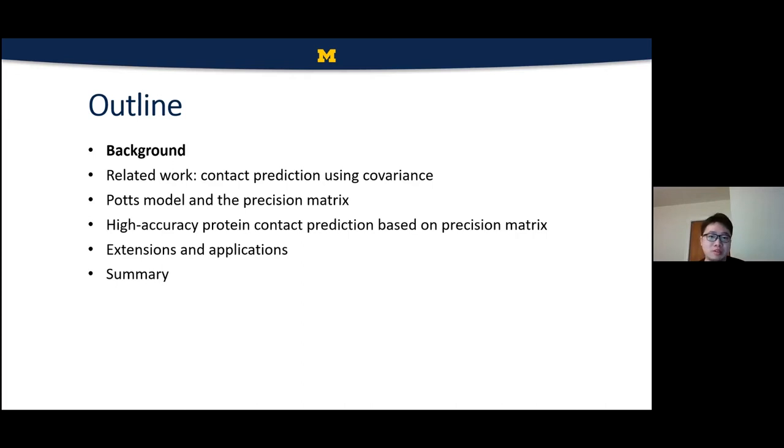A deep learning based method that uses the feature of covariance between two positions of the multiple sequence alignment data. After that, the inverse of the covariance matrix, the precision matrix will be introduced, which also can be interpreted as the Gaussian approximation with Potts model. And based on the precision matrix, a high accuracy protein contact map predictor, ResPRE, can be obtained by coupling the precision matrix with deep ResNet. And an extension of ResPRE and some applications that are built on it will also be briefly introduced.